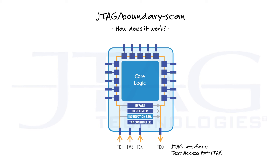The instruction loaded in the instruction register selects the data register you want to use. Note that a fifth optional signal, called test reset (TRST), is added to the TAP interface. This signal can be used to reset the TAP controller. Since this reset can also be accomplished by holding TMS high for five TCK periods, the TRST signal is optional.